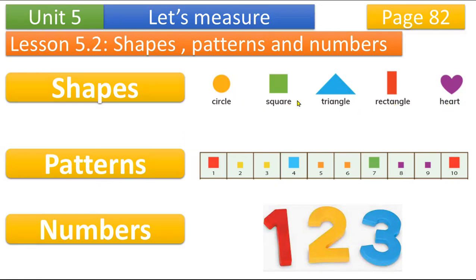Second, we learned what is a pattern. Patterns mean repeating shapes. Look at number one — in number one, what shape do we have? Square. In pattern two, what is this? Small square. Pattern three: two small squares and one big square.